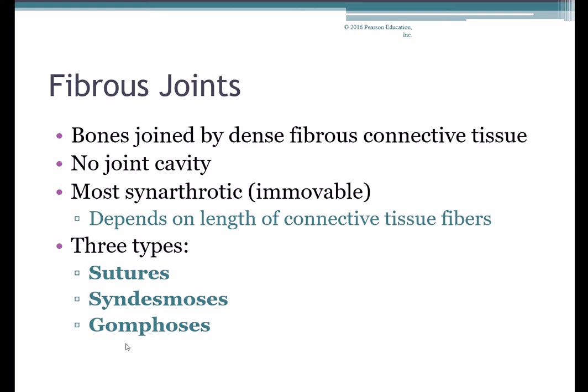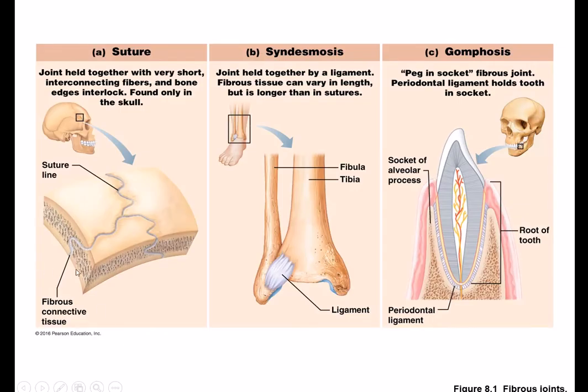Fibrous joints are connected by dense fibrous connective tissue and do not have a joint cavity — it's really just one bone end connected to another through tiny, dense fibrous connective tissue, essentially small ligaments. Most fibrous joints are synarthrotic, meaning immovable. If the connective tissue fibers are a little bit longer they might give the joint a slight amount of give, but by and large they're pretty immovable. There are three types of fibrous joints.